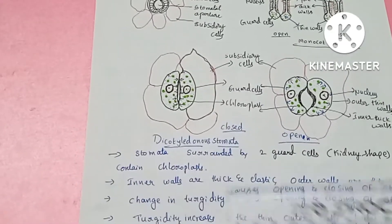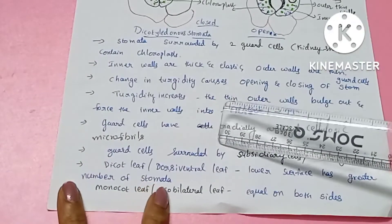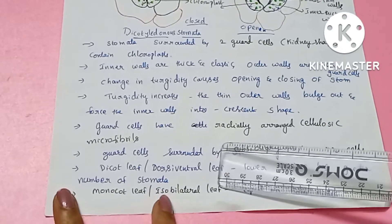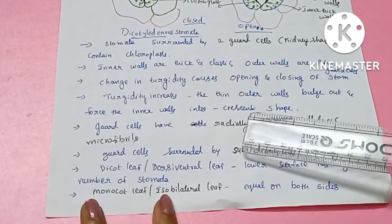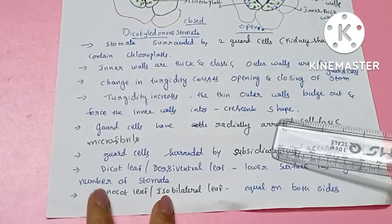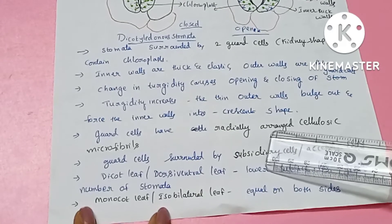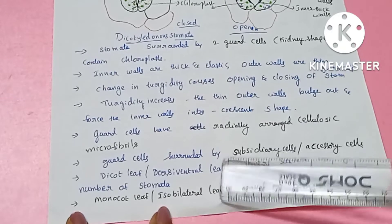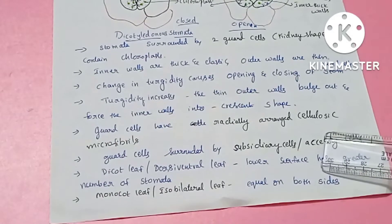In a dicot leaf, which is a dorsiventral leaf, stomata are more numerous on the lower surface and fewer on the upper surface. In a monocot leaf, which is an isobilateral leaf, there is an equal number of stomata on both sides.